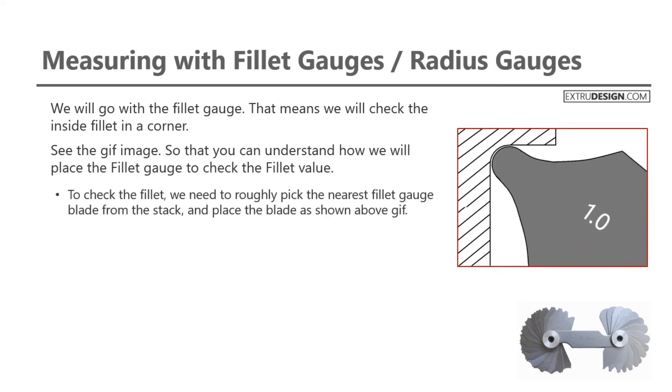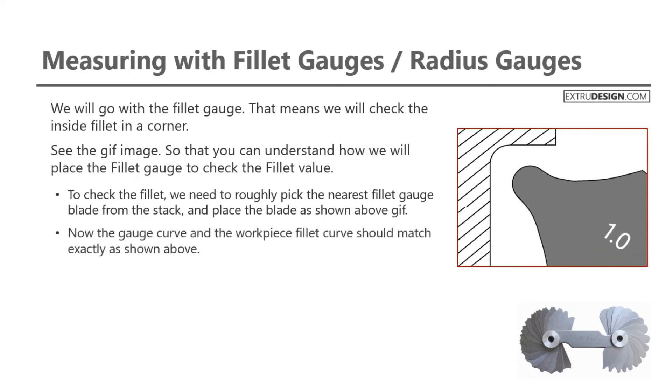To check the fillet, we need to roughly pick the nearest fillet gauge blade from the stack and place the blade as shown in gif image. Now the gauge curve and the workpiece fillet curve should match exactly as shown above.